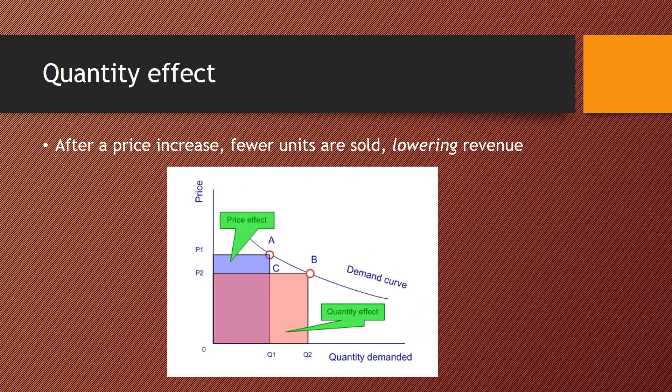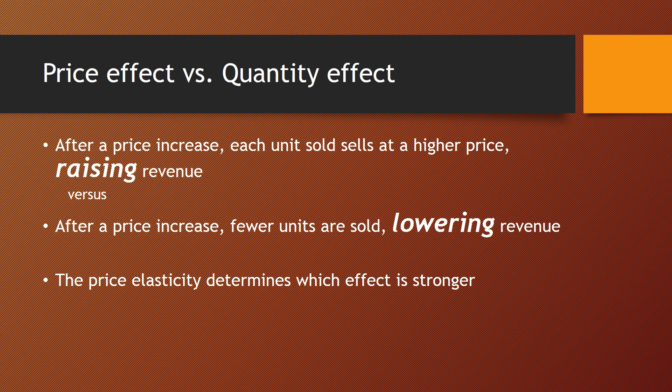The quantity effect, on the other hand, focuses on what happens to quantity demanded — and it suggests the opposite. When we move from point B to point A, we demand a smaller quantity, going from Q2 to Q1. That big pink rectangle represents all the goods and revenue that was there at point B but has now been lost — the decrease in total revenue. The bluish-purple periwinkle color represents the price effect — the increase in total revenue. So price and quantity effects work in opposite directions.